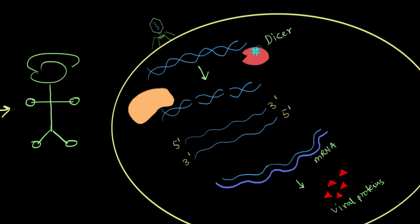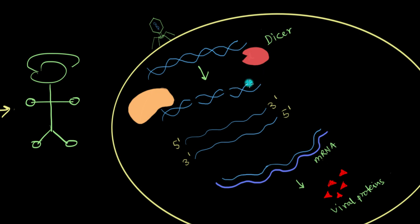Whenever Dicer chops the RNA, this chopping leaves behind something that is recognized by this yellow blob over here. This yellow blob is a multi-enzyme complex. Whenever Dicer chops off the longer RNA, it leaves a neon sticker at the end of each chopping. This neon sticker is recognized only by this yellow colored multi-enzyme complex. The minute it sees any small piece of RNA with that neon sticker, it's going to quickly bind that piece of RNA to itself.